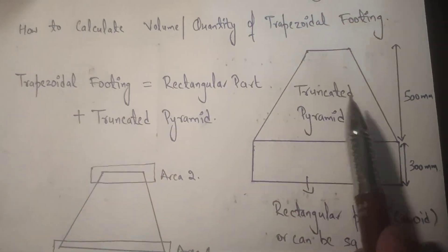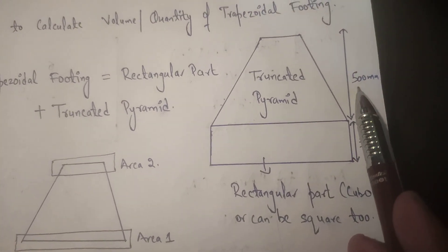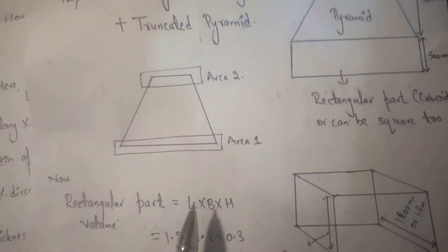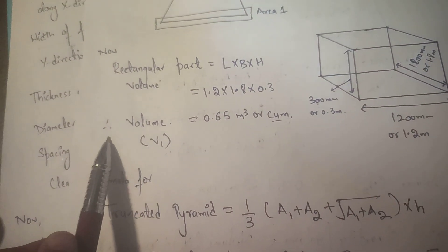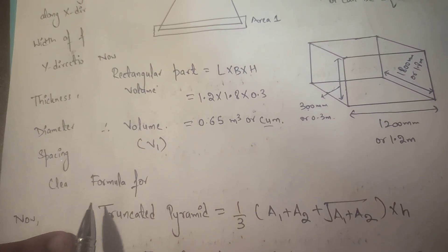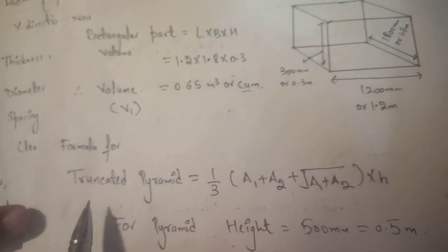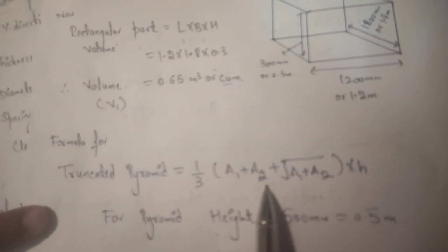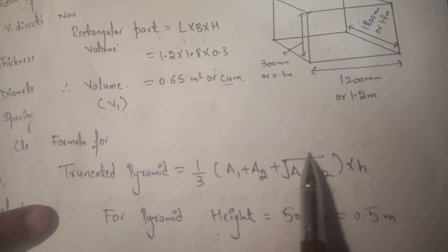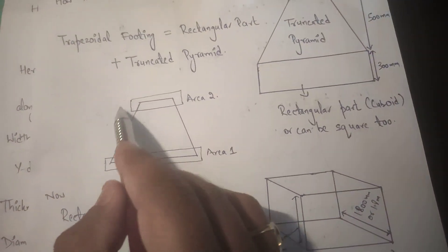Now for the truncated pyramid: the height is 500mm. The formula for a truncated pyramid is: Volume = (1/3) × (A1 + A2 + √(A1 × A2)) × height. As you can see in the figure, this pyramid consists of two areas — Area 1 and Area 2.